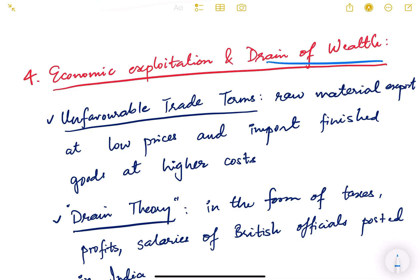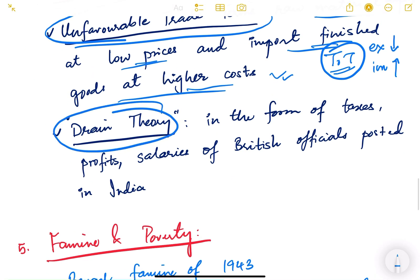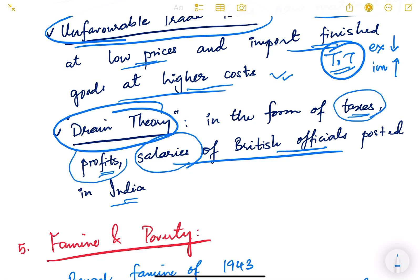Economic exploitation and drain of wealth was another major pre-independence condition. Unfavorable trade terms meant India exported raw materials at low prices and imported finished British goods at high cost, making the terms of trade unfavorable. The drain theory explains that wealth was being drained from India in the form of taxes, profits, and salaries of British officials posted in India. This theory was given by Dadabhai Naoroji, the nationalist economist.